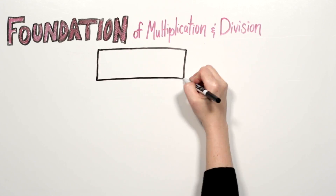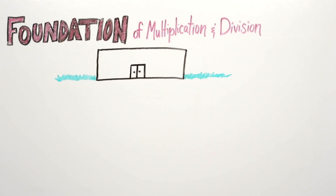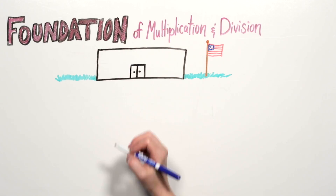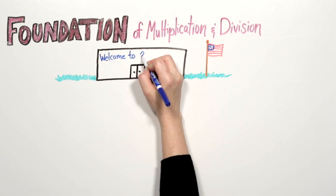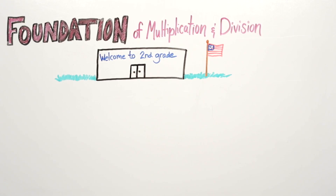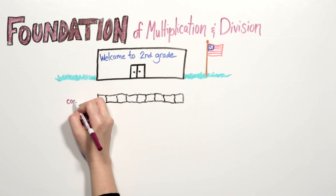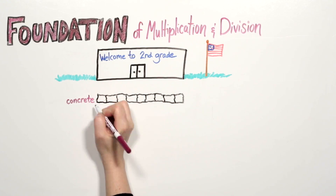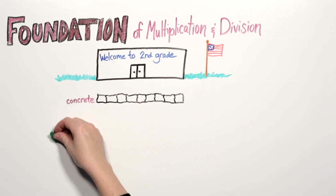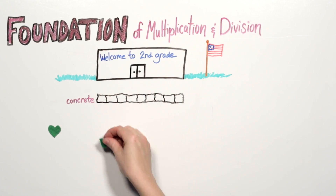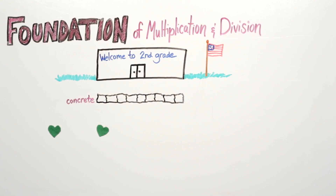Your child sets the foundation for understanding multiplication and division in second grade. The first layer in building this foundation is a concrete understanding. He will use objects as counters to create equal groups.